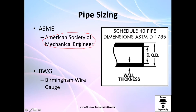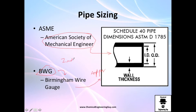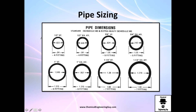It is more common to use the ASME nomenclature. The Birmingham Wire Gauge is more applicable to copper and similar materials. Just keep in mind that if they tell you it's a 2-inch BWG pipe, go check the BWG tables; if they tell you it's 2-inch in the ASME nomenclature, go check the ASME tables. This table shows schedule 40 and extra heavy schedule 80.